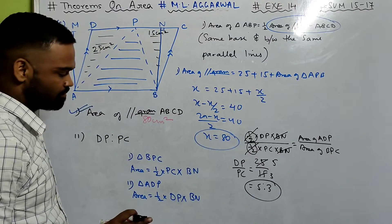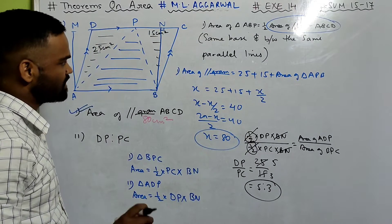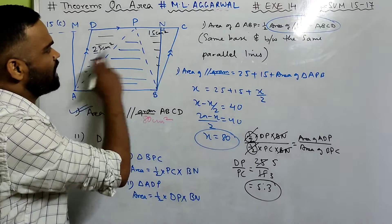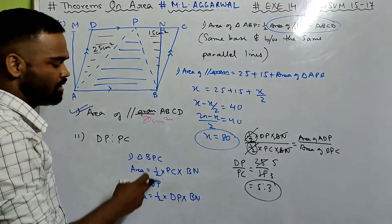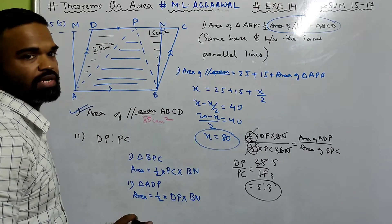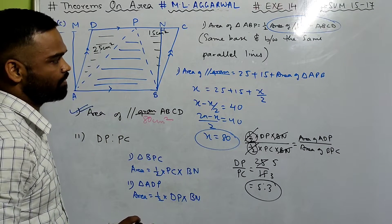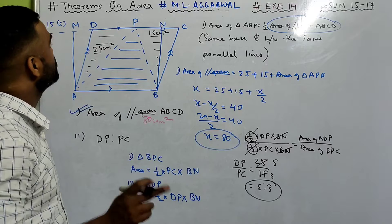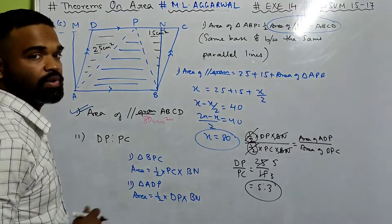Very easy. Step by step: find the area, note that heights are the same, find the ratio and you get the answer. Let's do the next one now.